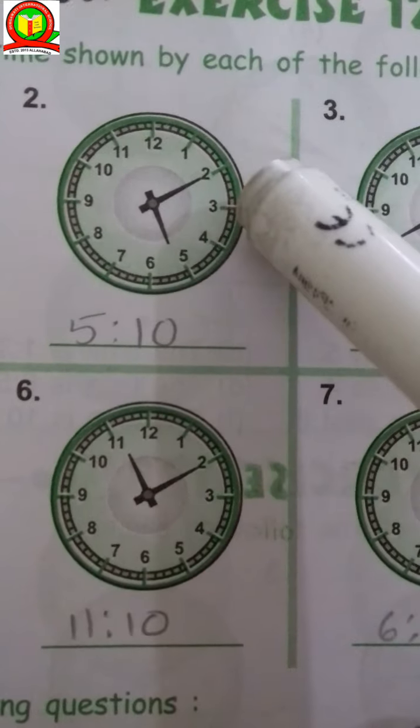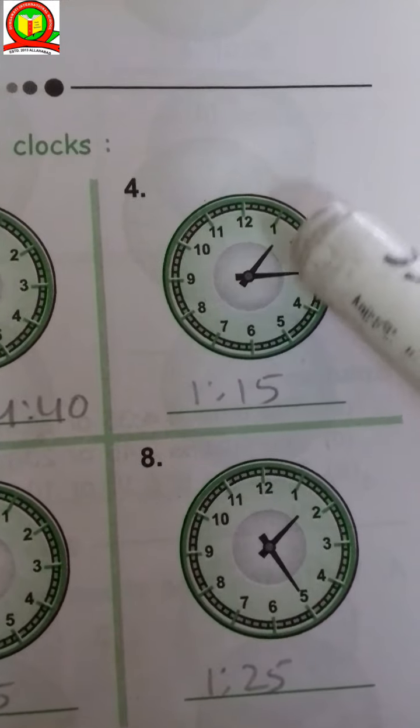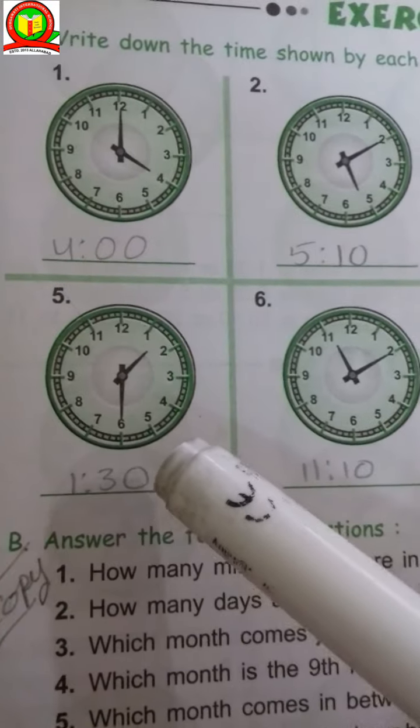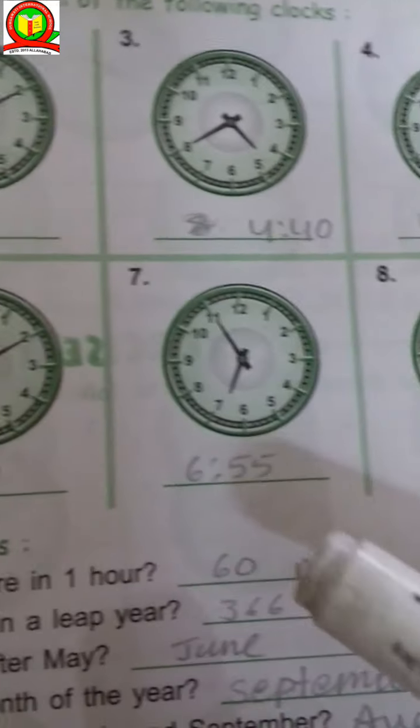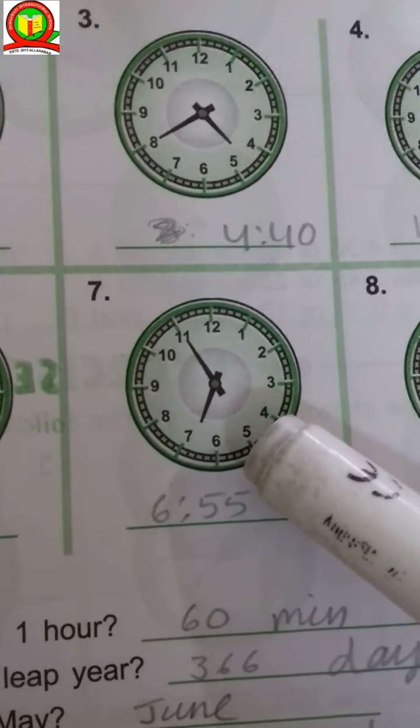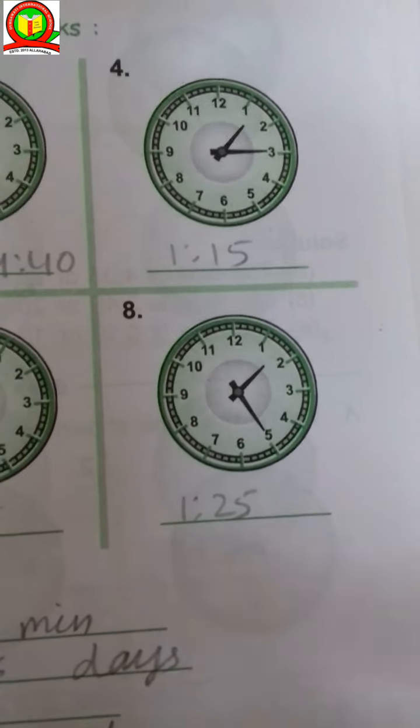It's 5:10, and it's 4:40. It's 1:15 and this one is 1:30. 11:10. Now you can see it's 6:55 and now here 1:25.